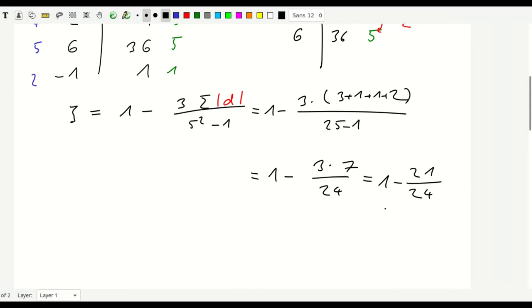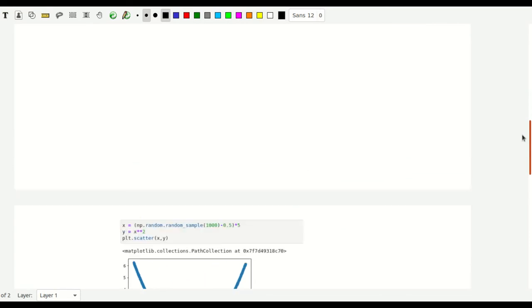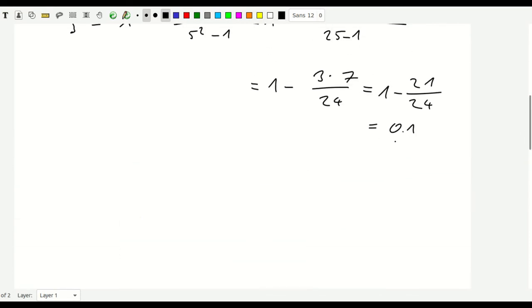So we end up with one minus twenty-one divided by 24. So this is actually pretty small. So it's like one minus 0.1 because I'm better than that. Okay. So anyway, this is not what we wanted. So this is pretty small. And why is that?